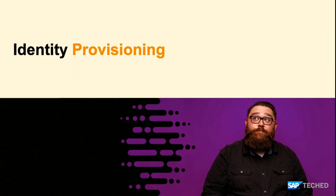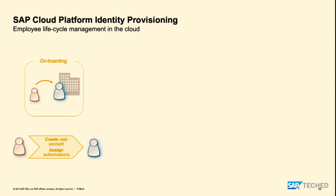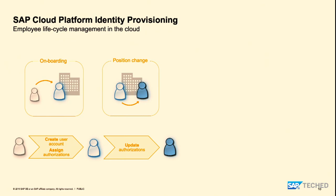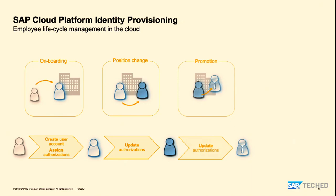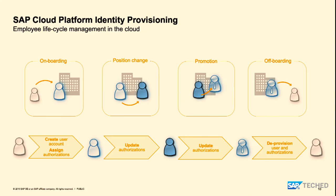Let's look more at the provisioning service, because with provisioning we establish and prepare the stage. The provisioning service distributes user accounts across systems, covering the whole user flow: from hiring an employee, through position changes or promotions where authorizations can be updated, to when a user leaves the company or retires, where we can remove users and authorizations from the systems. So we can cover the employee end-to-end flow — users can access everything they need from their first day to their last day.